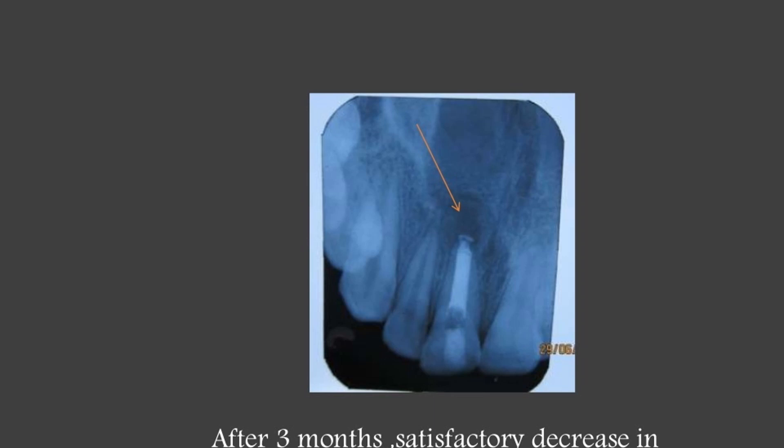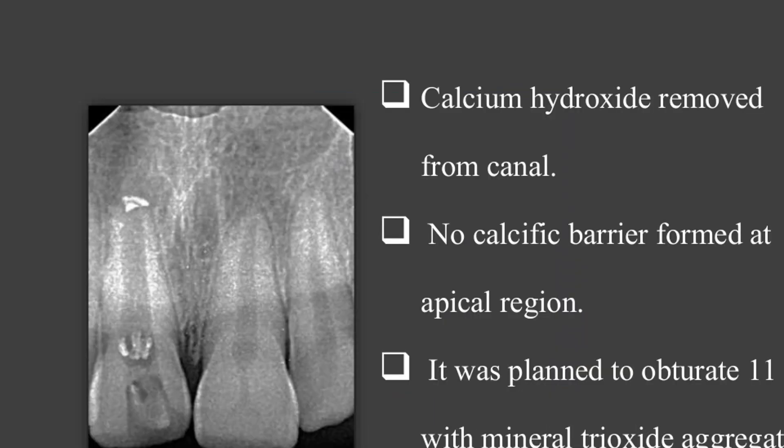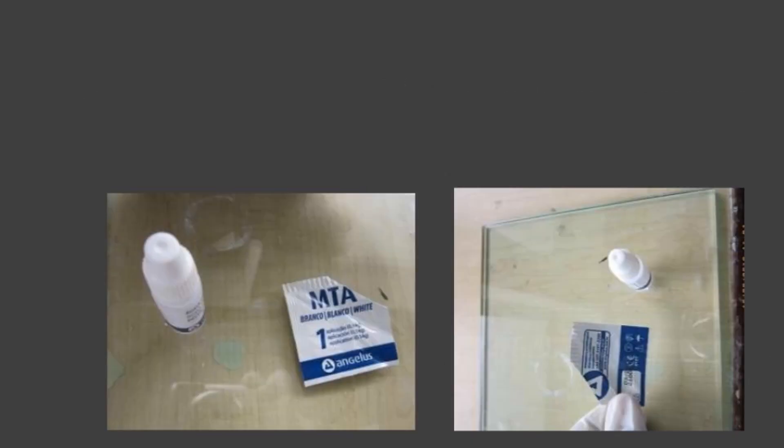After three months, satisfactory decrease in periapical radiolucency was evident. Calcium hydroxide was removed from the canal. No calcific barrier was formed at the apical region. It was planned to obturate tooth 11 with Mineral Trioxide Aggregate (MTA).